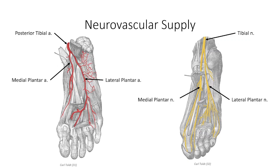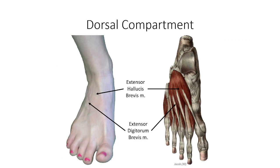The lateral plantar nerve passes deep to abductor hallucis into the lateral compartment. Its deep branch supplies all muscles not innervated by the medial plantar nerve, while the superficial band supplies skin over the lateral one and a half digits — thus greater muscular and less cutaneous distribution. The medial plantar artery, the smaller terminal branch of the posterior tibial artery, supplies the muscles of the great toe. The lateral plantar artery, the larger branch, travels with the lateral plantar nerve and curves medially to form the largest component of the deep plantar arch.